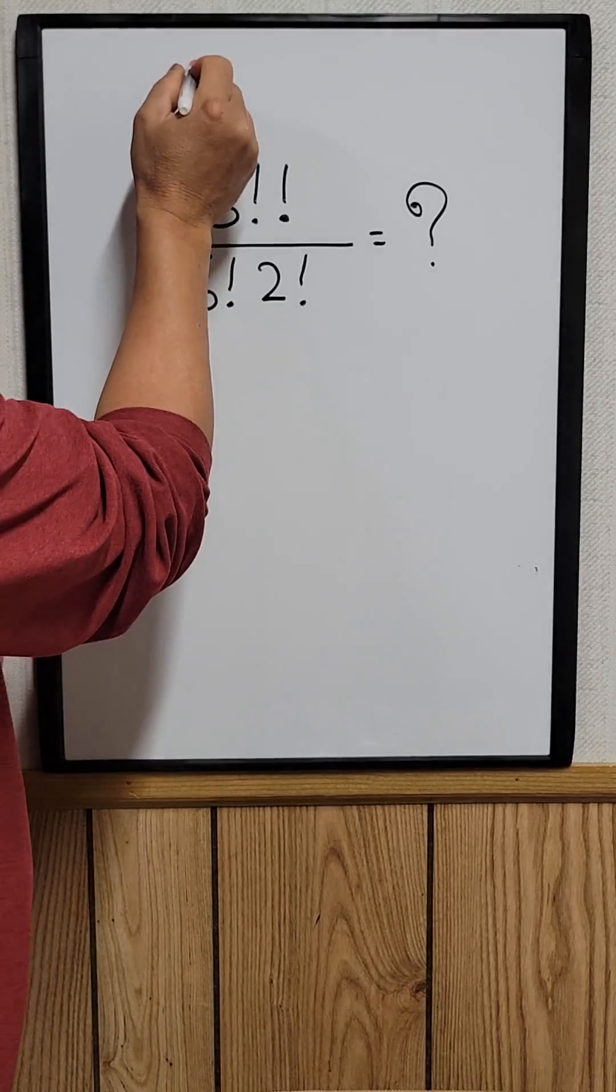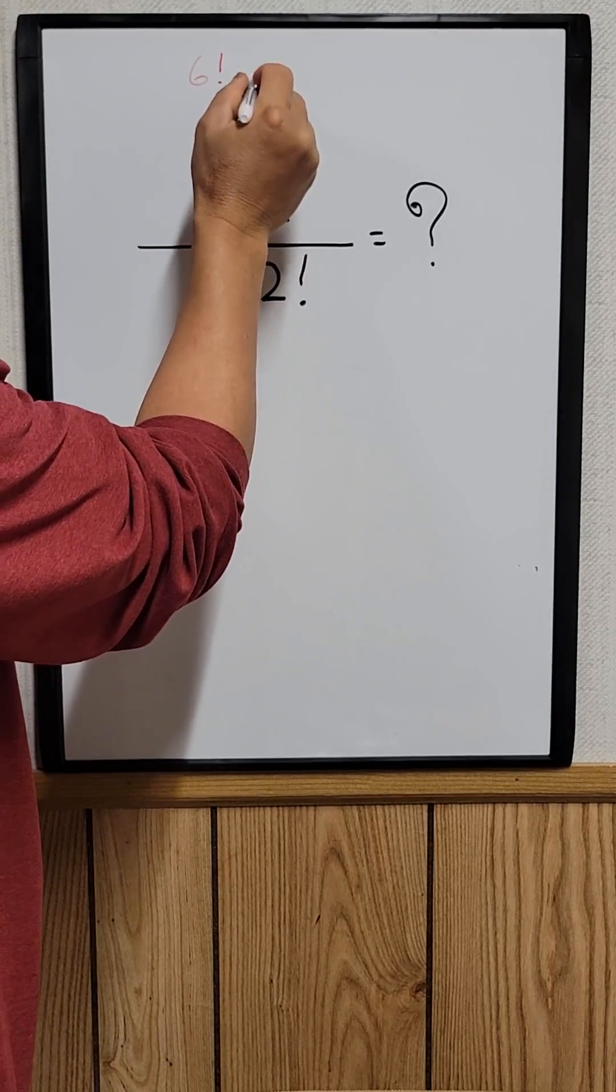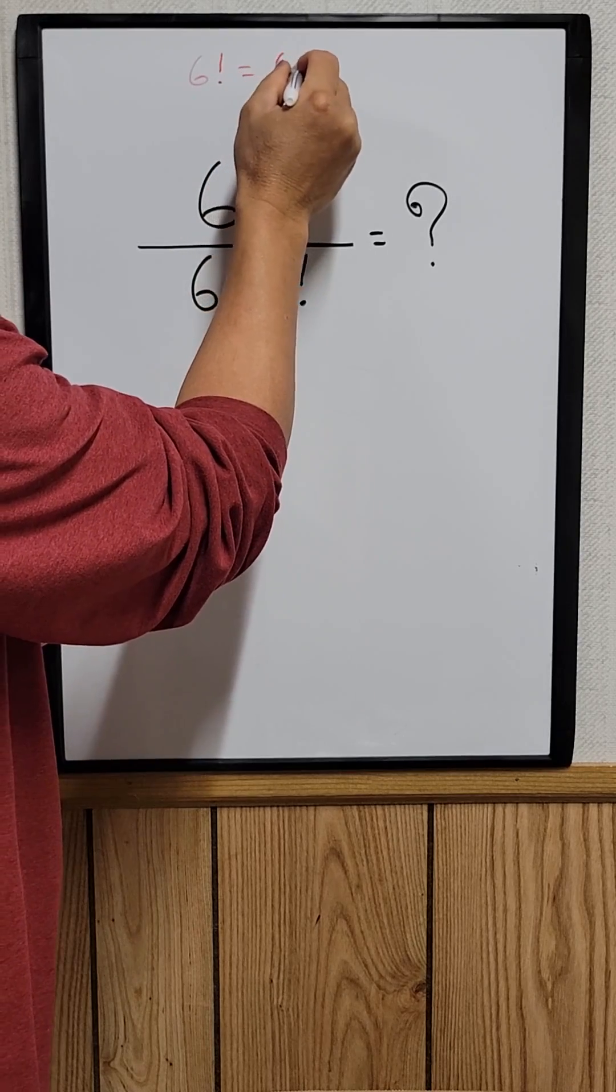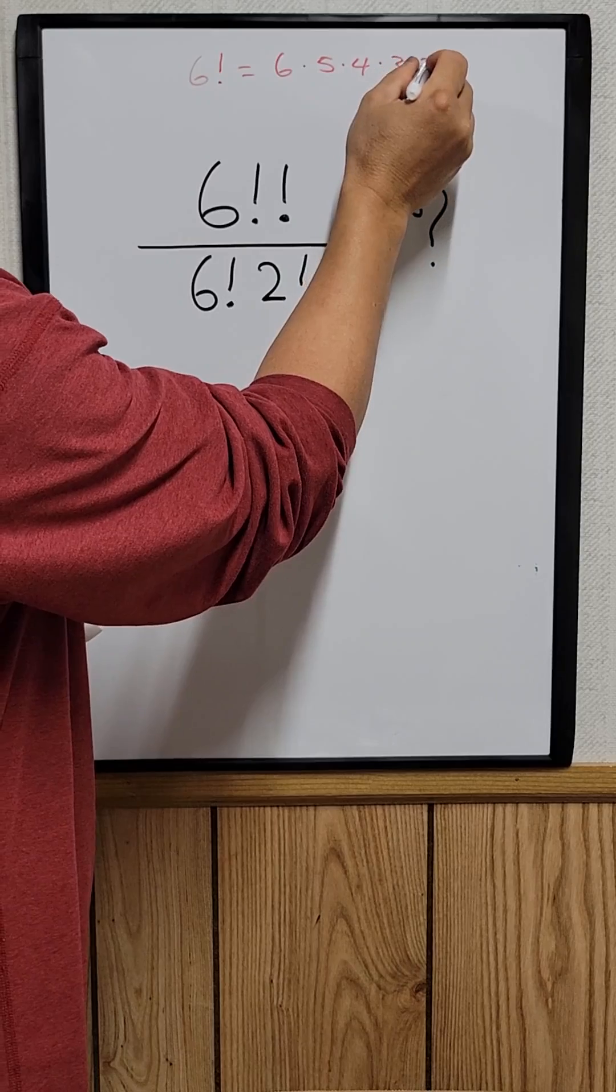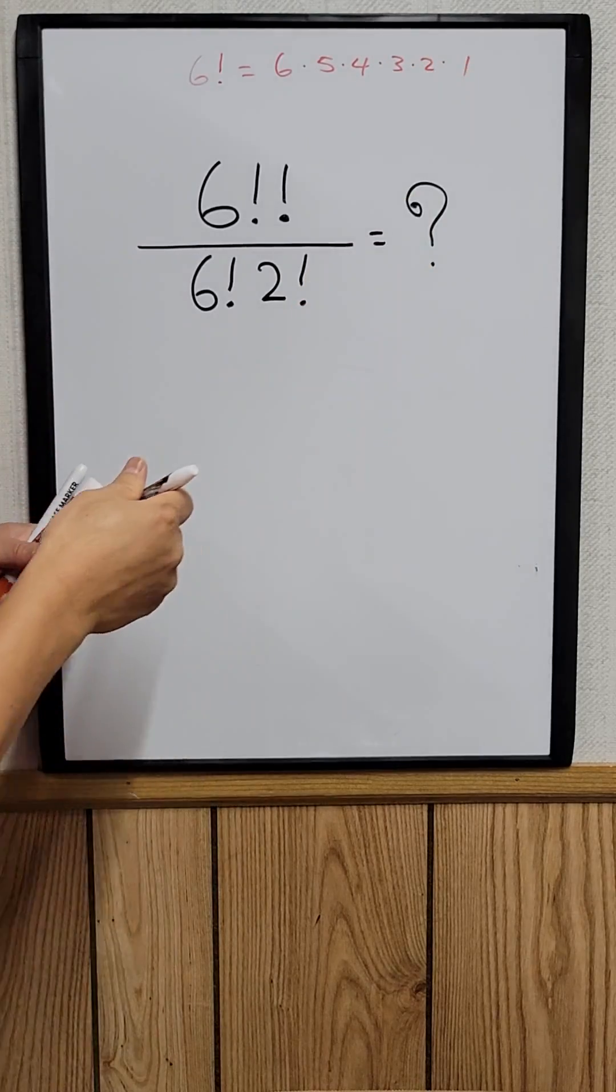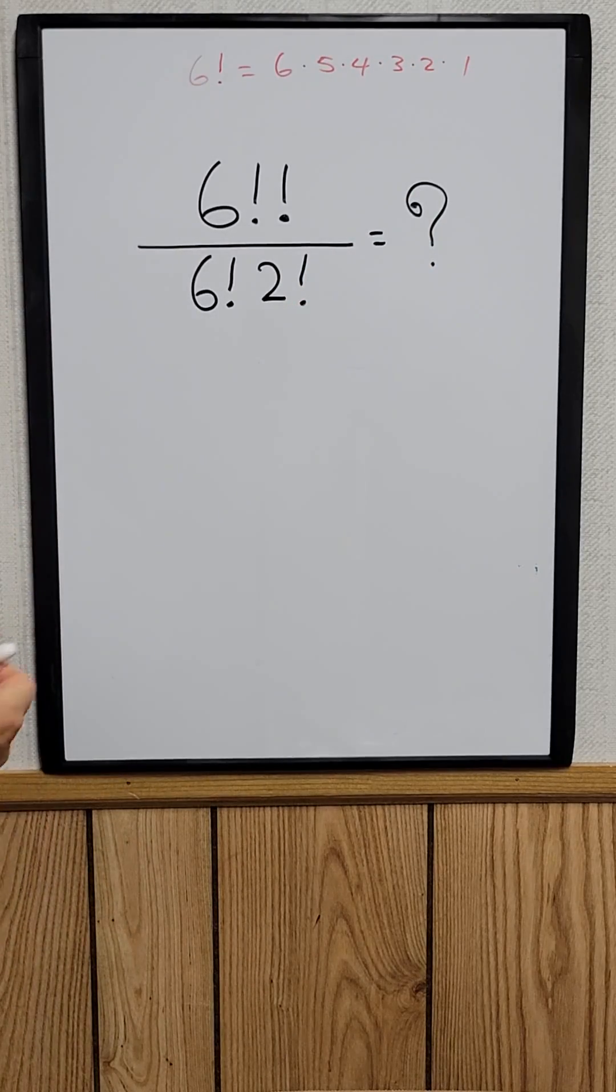You know six factorial just equals six times five times four times three times two times one.